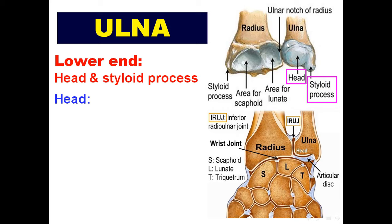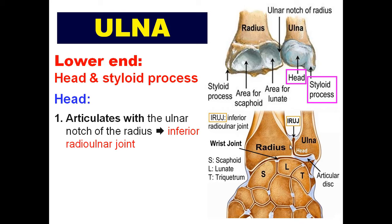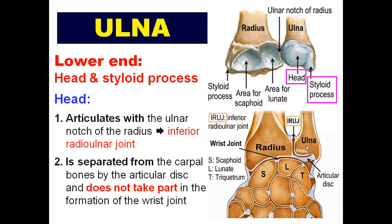The lower end of the ulna is formed of the head and the styloid process. The head of the ulna articulates with the ulnar notch of the radius to form the inferior radioulnar joint. The head of the ulna is separated from the carpal bones by an articular disc. That is why the ulna does not take part in the formation of the wrist joint.